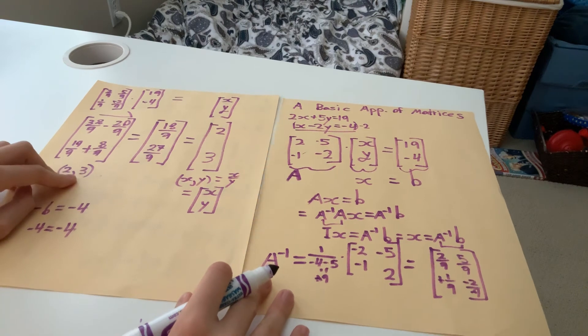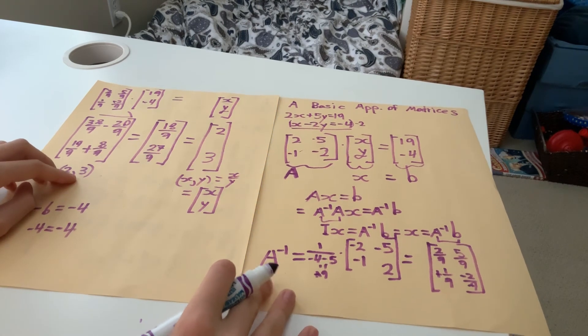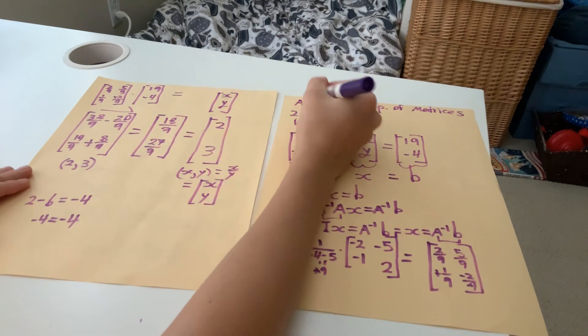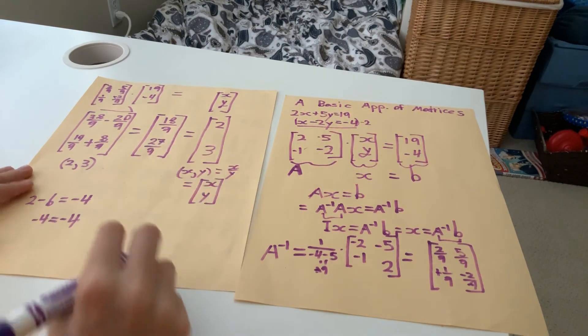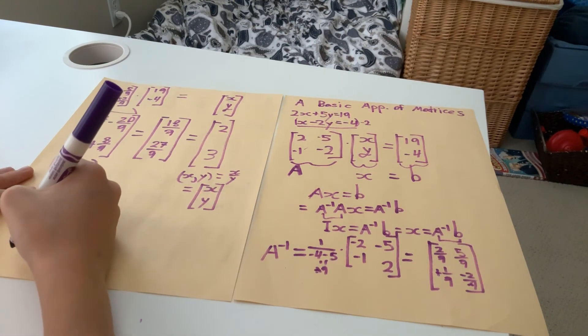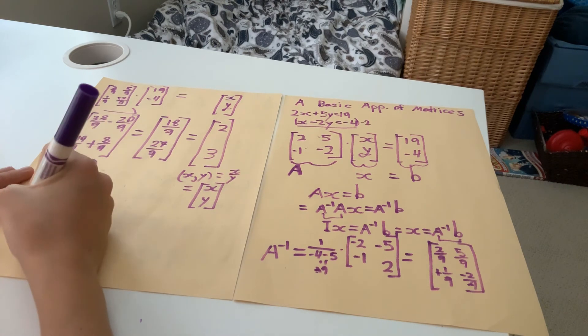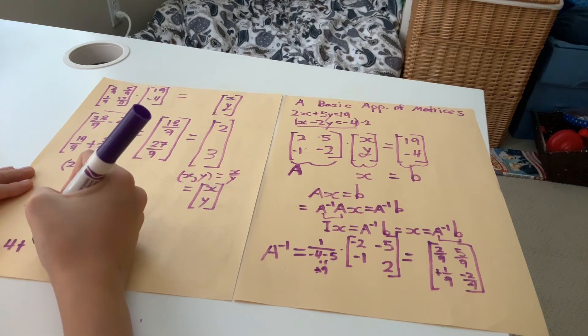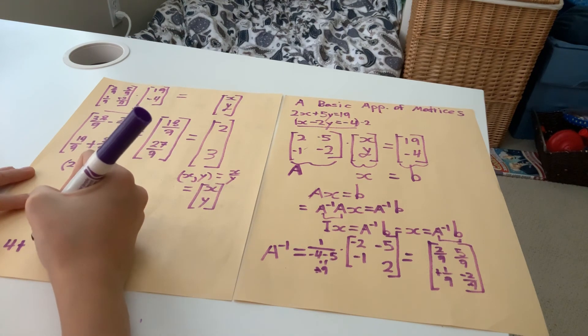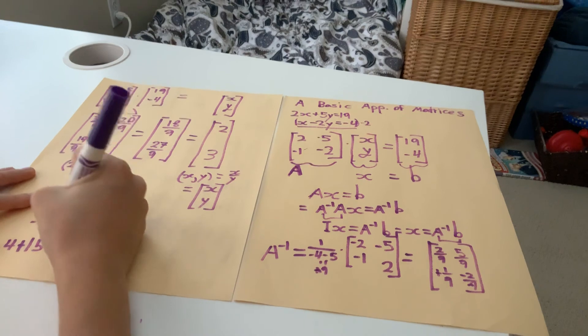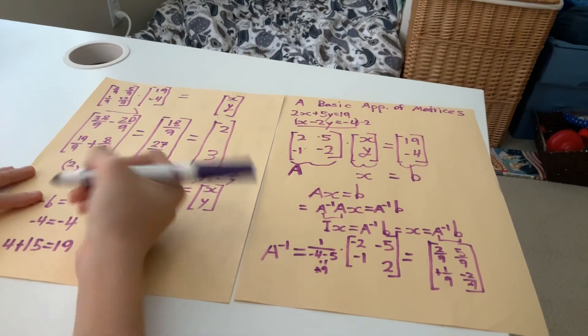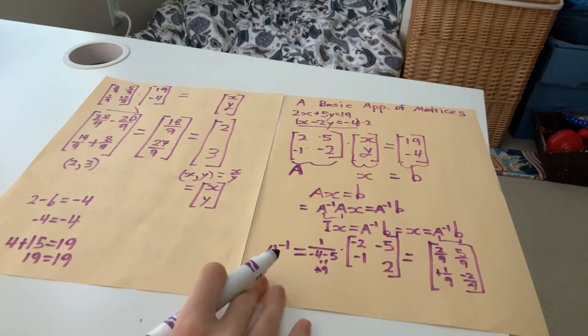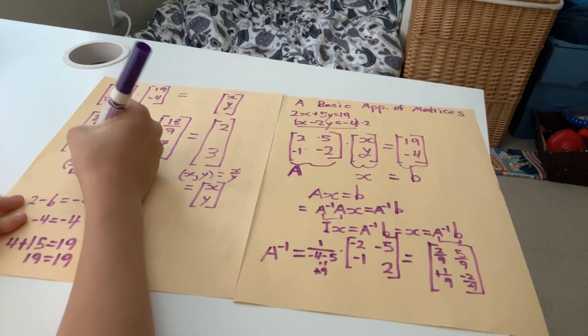So why don't we just try the other equation? So let's set x equal to x and y equal to y and plug in, substitute. So 2 times 2, that's 4, plus 5y, y is equal to 3, so 15, and that's equal to 19. It should be equal to 19, and yes it is. This implies that 19 equals 19. So now we've just proven that this is the correct solution for both equations.